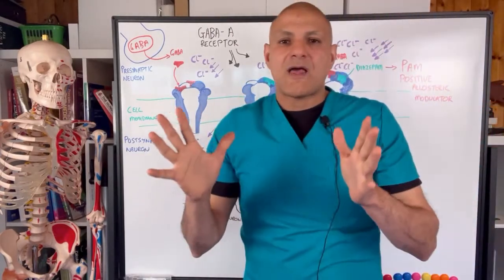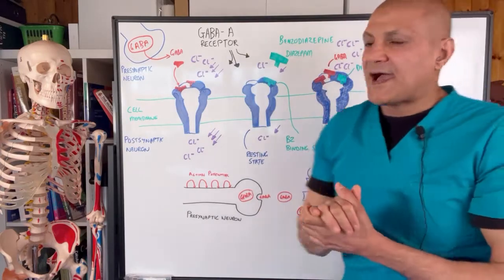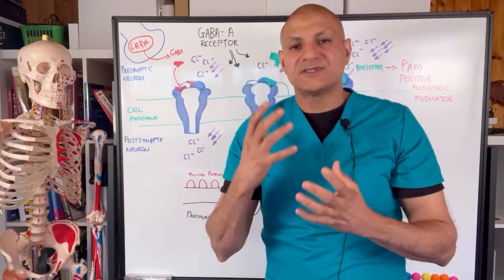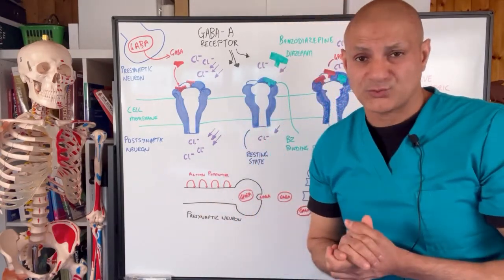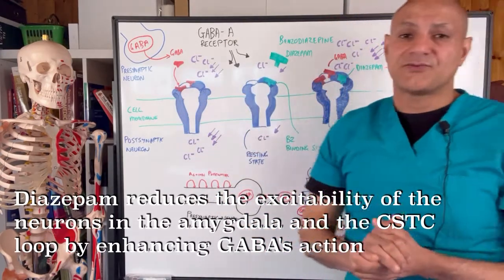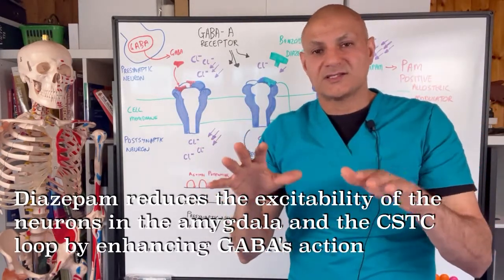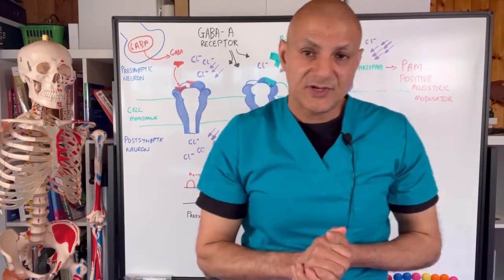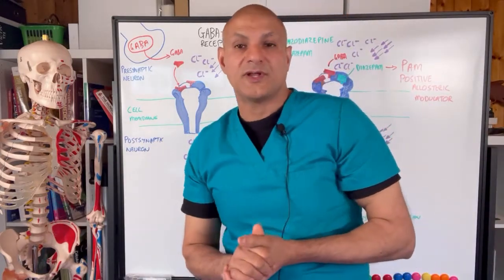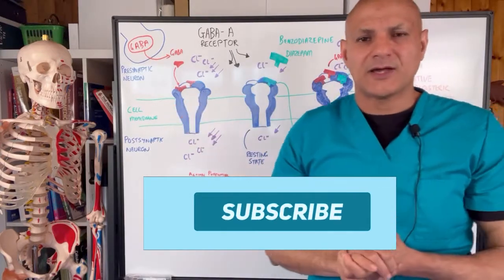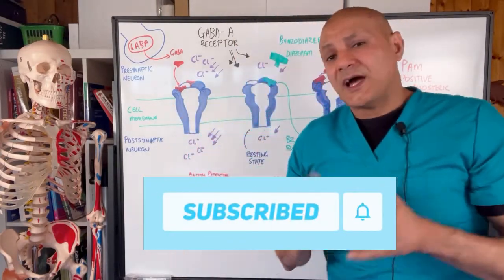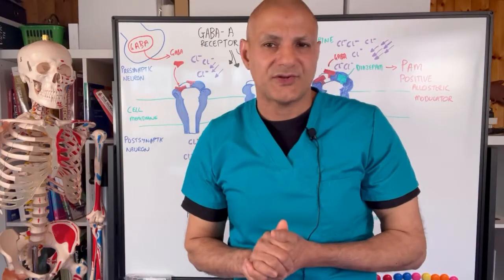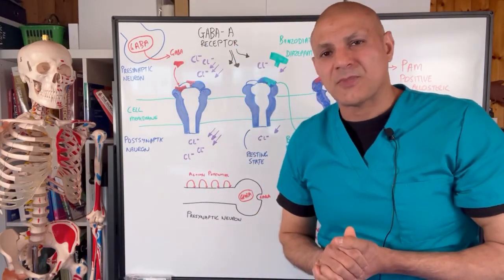So this video has explained how diazepam works — the mechanism of action. Now you know what happens if you're ever prescribed diazepam and how it's working: it's basically increasing the effects of GABA, which calms the excitability of neurons down in those two brain areas in particular. If you enjoyed the video, please give us a thumbs up. If you haven't done so already, please subscribe and press the bell icon so you get notified of our next video. If you have any questions or comments, just leave them below and I will get back to you. Thanks for watching — bye, see you next time.